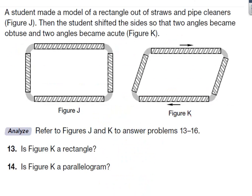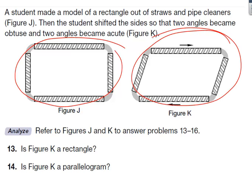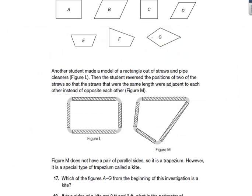If you take a square and shift it, two angles become obtuse and two angles become acute, but it still has the same equal sides. If you take rectangles made of straws and pipe cleaners and a student reverses the position of two of the straws, it changes from a rectangle to a trapezeum — it changes it quite a bit.